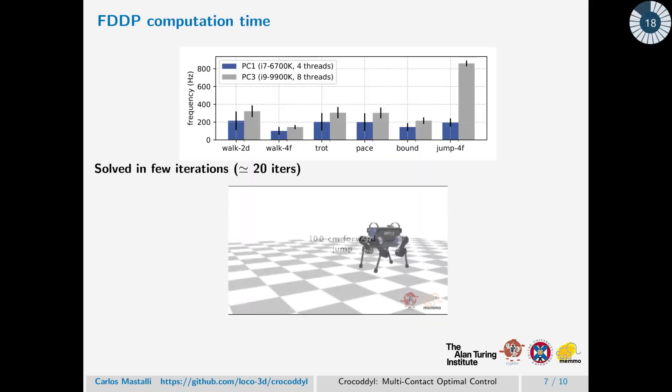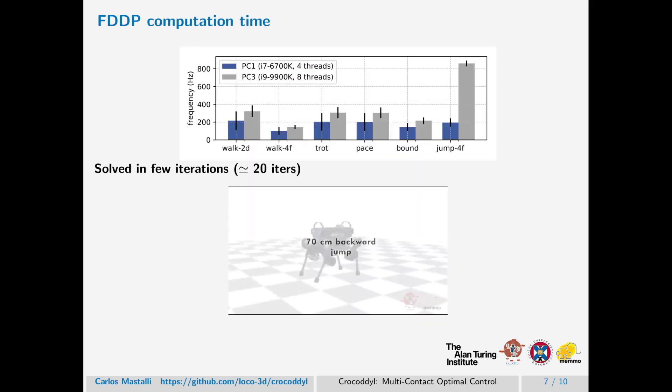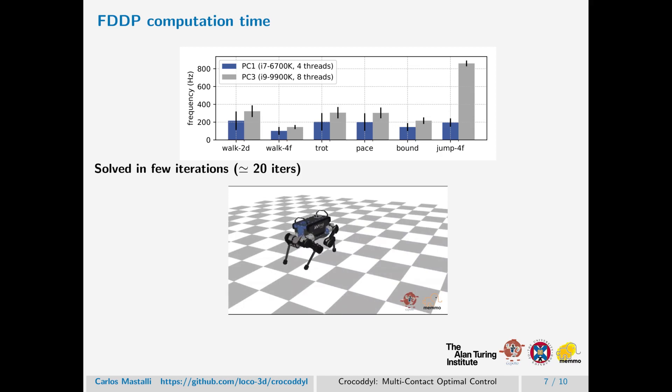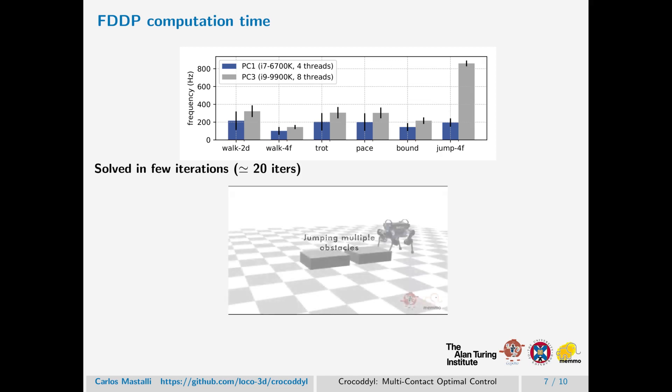When we compare the computation time of the FDDP, we can say that they are almost the same. In the plot, we have analyzed different computation time for different tasks in quadrupeds and humanoid robots, where we can see that it's possible to achieve at least 100 Hz for model predictive control, and we could also reach 1000 Hz surprisingly.